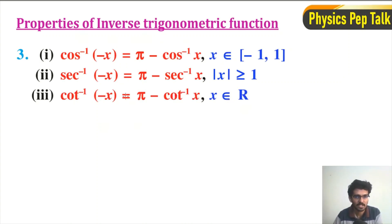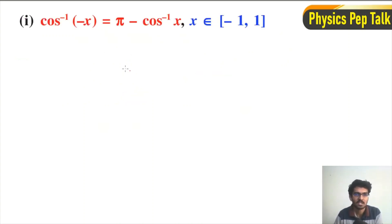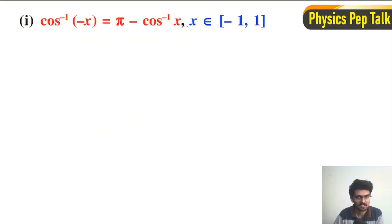These three properties are derived from another one. I will consider the first one: cos⁻¹(-x) = π - cos⁻¹(x), for x belonging to the closed interval [-1, 1].